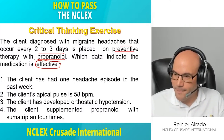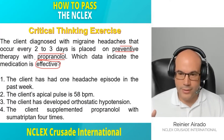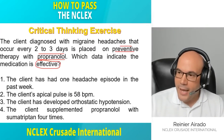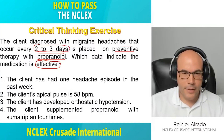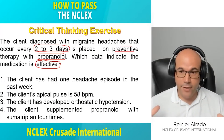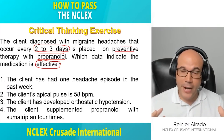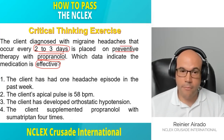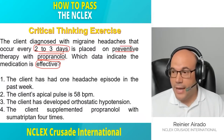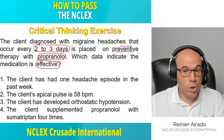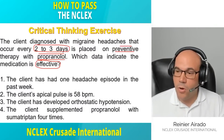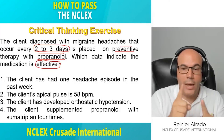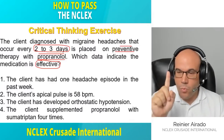The stem tells us migraine headaches occur every two to three days. There are seven days in a week, so if it happened every two days the patient experienced at least three episodes that week; every three days, at least two episodes. Now look at answer number one — the client has had one headache episode in the past week. One headache in seven days.